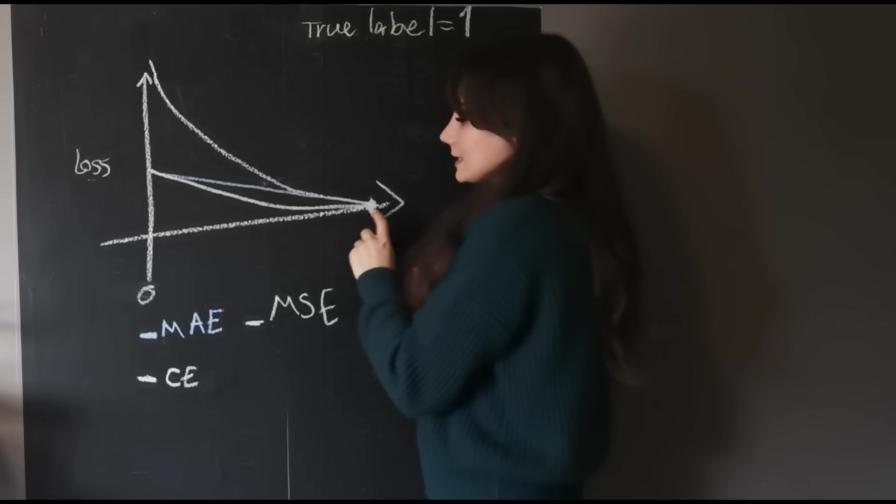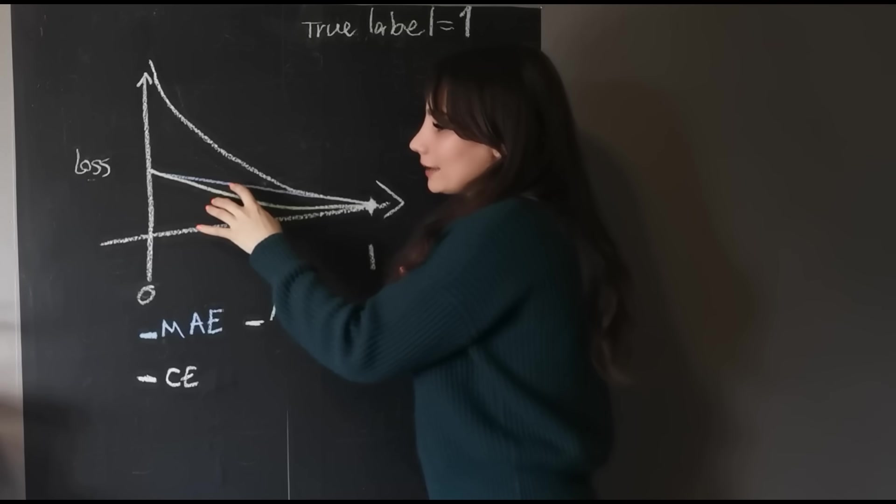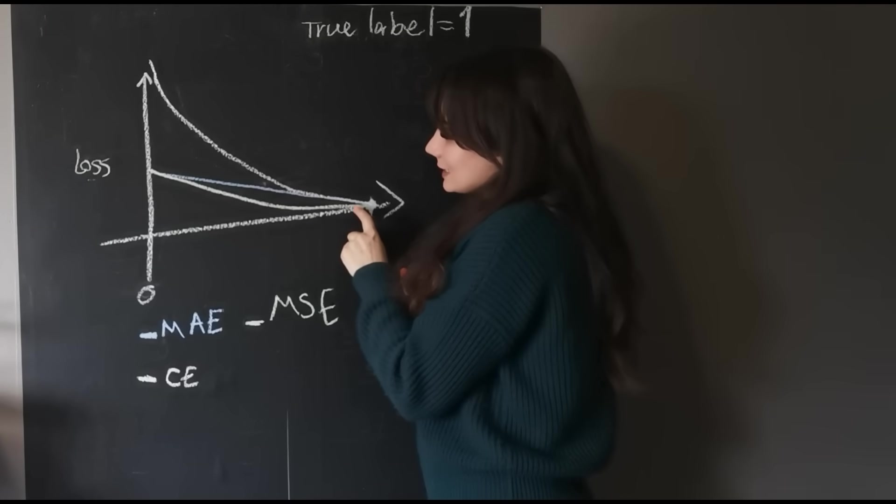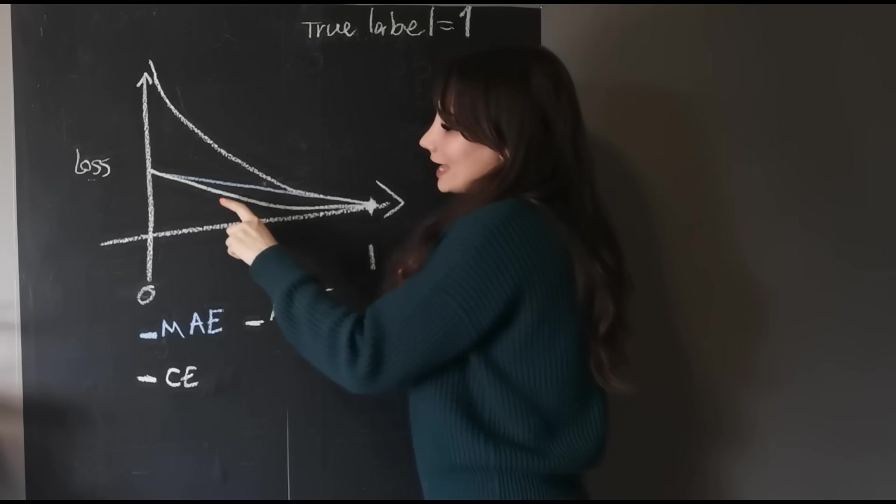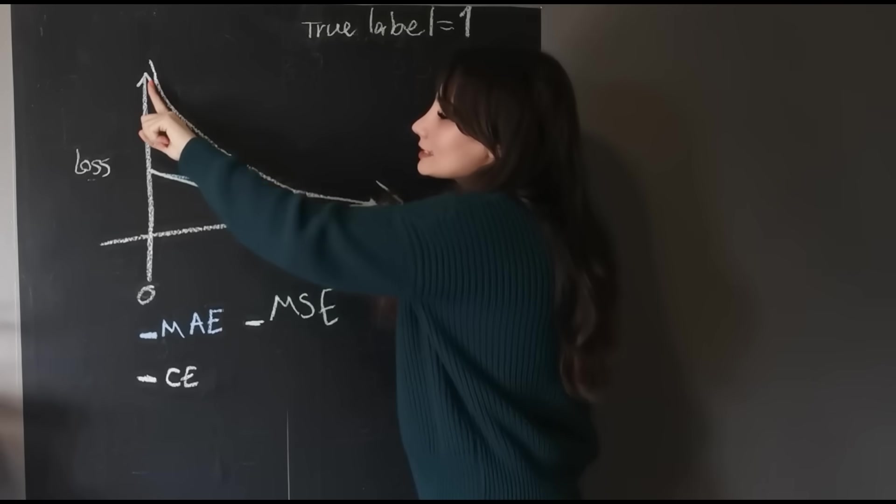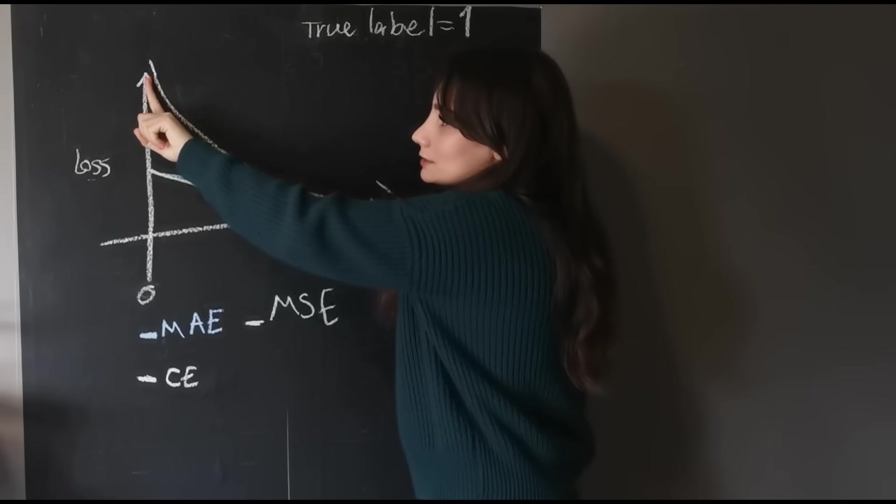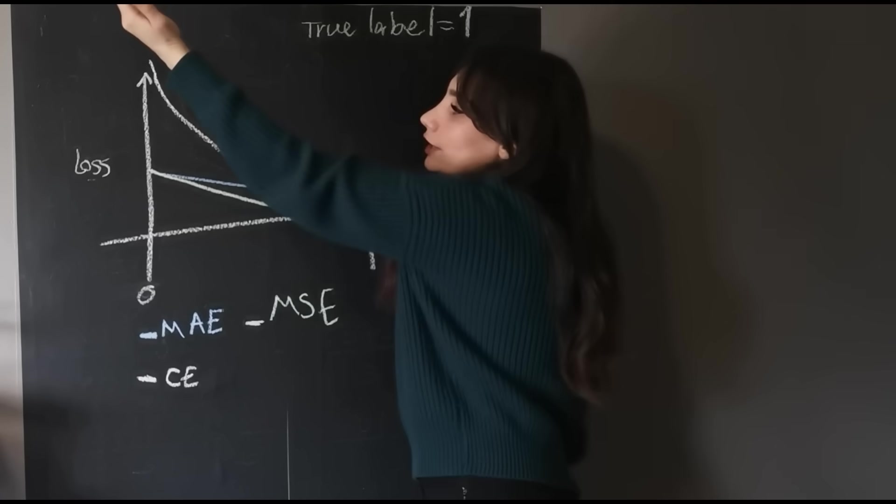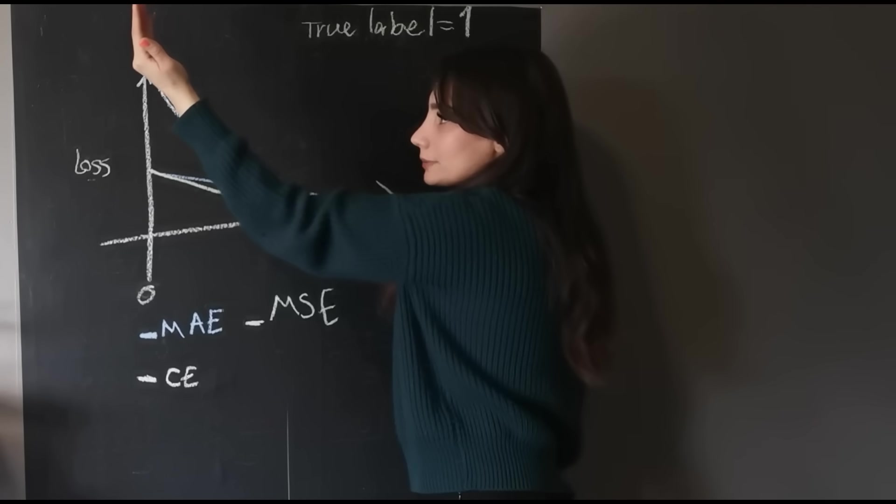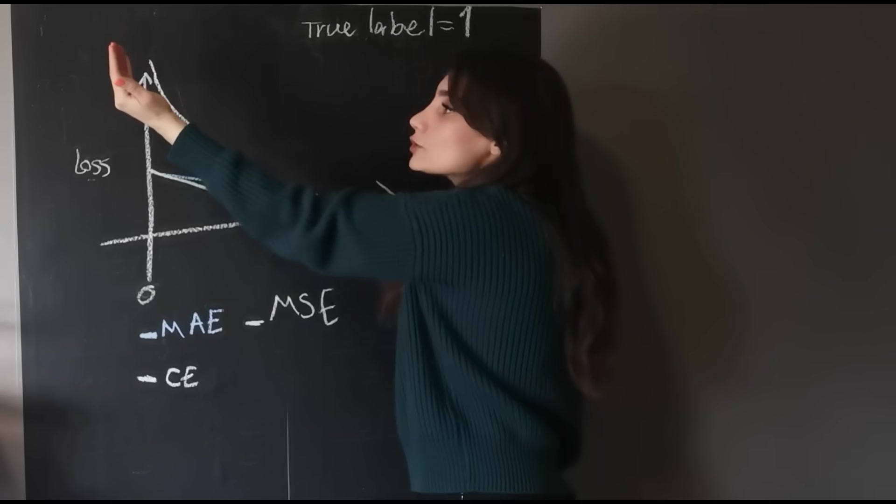If you're using something like MSE or MAE, as you can see, they are very slow and it doesn't matter. For example, when it is very wrong, the curve becomes much steeper. That means learning happens more.